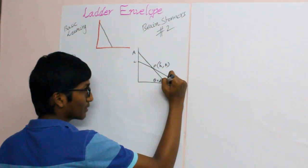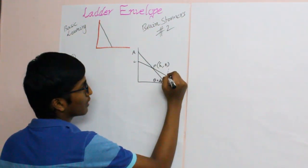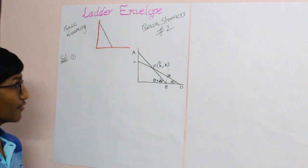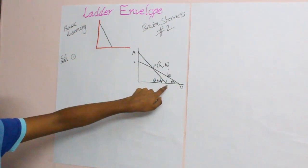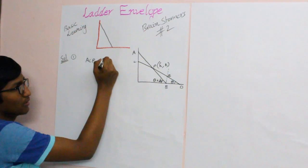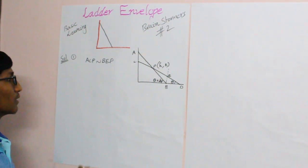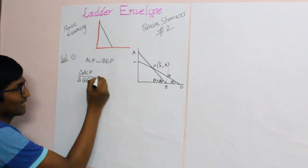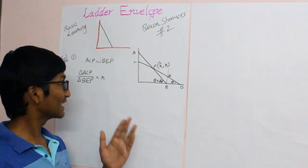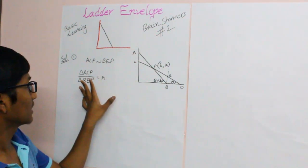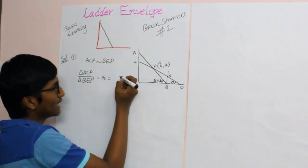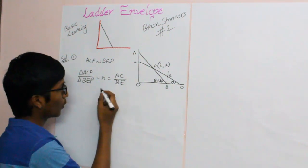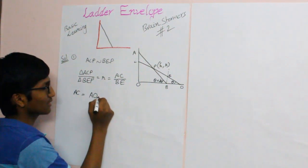Look carefully at what I am doing. I am drawing a line parallel to AC through B, which intersects CD at point E. Now if we see carefully, triangle ACP is similar to triangle BEP. Our agenda is to find the ratio of the sizes of these two triangles, which can be found using the ratio of AC to BE. In order to find AC, let us name the origin as O. AC is equal to AO minus CO. For simplicity, I am assuming the length of the ladder as 1.